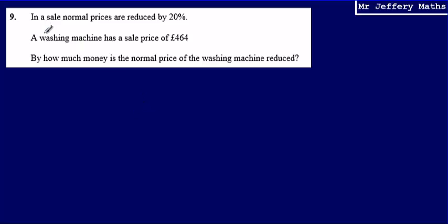This is question nine. Here I'm told that in a sale normal prices are reduced by 20%. I'm then told that a washing machine has a sale price of £464 and I'm asked by how much money is the normal price of the washing machine reduced?